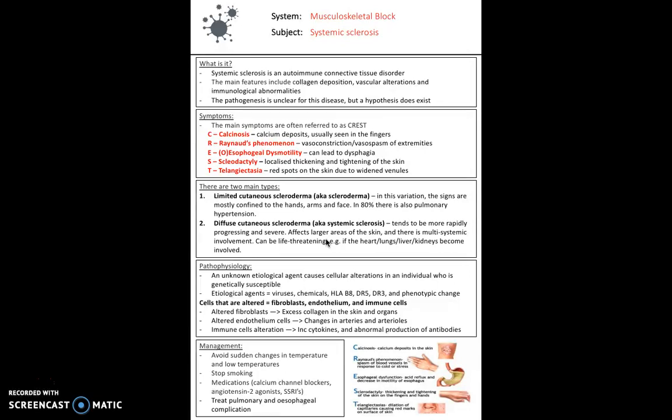It's often associated with CREST, which may describe the main signs and symptoms of systemic sclerosis. We've got calcinosis, where you have calcium deposits usually seen in the fingers. There's also Raynaud's phenomenon which you may have come across. This is vasoconstriction or vasospasm of the extremities, particularly in cold weather. Esophageal dysmotility, be aware of the American versus English spelling, which can lead to dysphagia in these patients. Sclerodactyly, this is localized thickening and tightening of the skin. And telangiectasia, these are red spots on the skin due to widened venules.